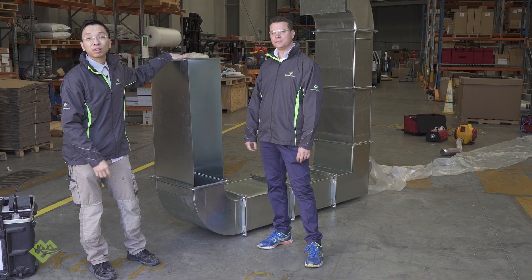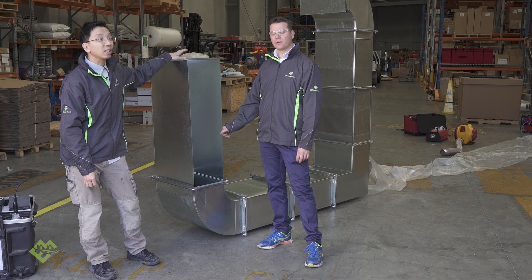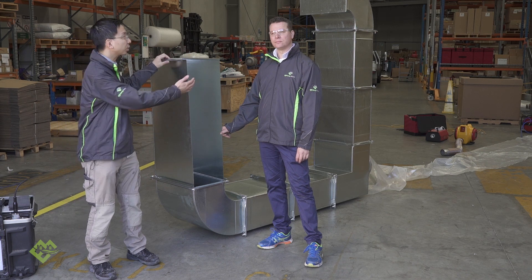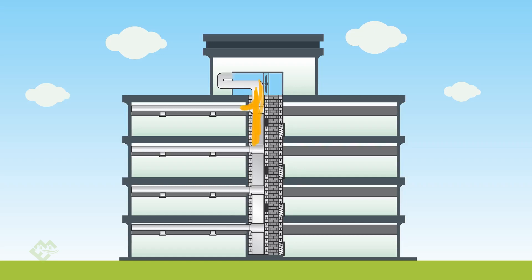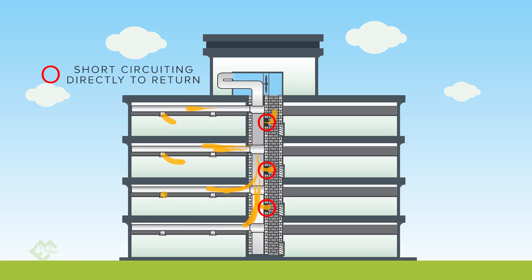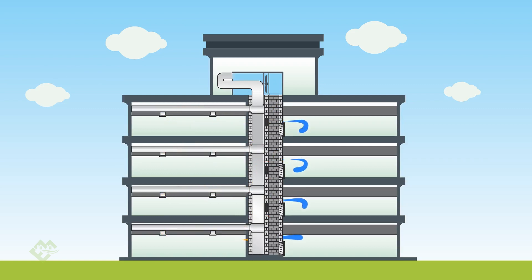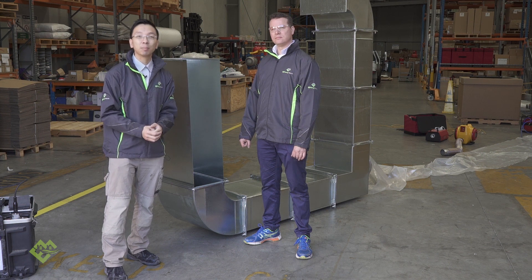Beyond wasting 35 percent of conditioned air, leakage also messes up your control systems. The conditioned air may leak directly into the return air path, causing conflicting signals — the thermostat in the room says you need more cooling, but the return air temperature sensor at the air handling unit says it's already cold enough. The control system simply doesn't know what to do, which can have a very significant energy implication.